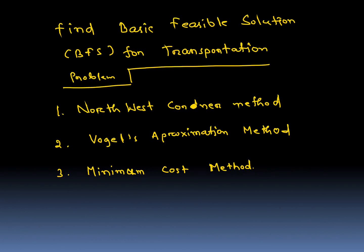For finding the basic feasible solution for transportation problems, mainly three methods are used: the North West Corner method (NWC), Vogel's Approximation Method (VAM), and the Minimum Cost method or Least Cost method. These three are important.